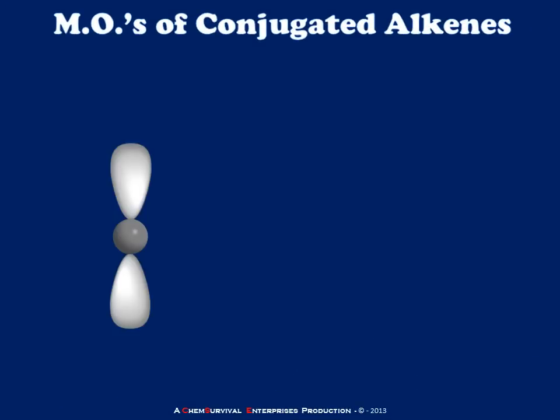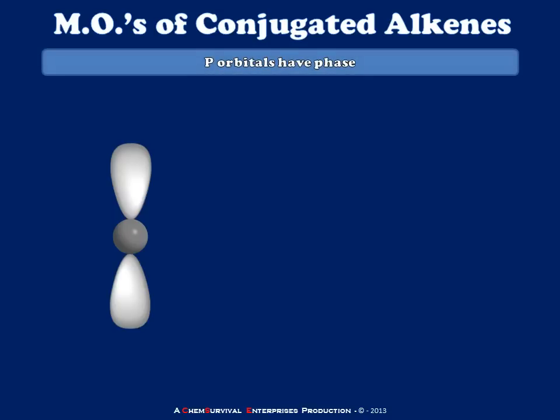I'm going to begin our discussion by showing you a p-atomic orbital. Up until now, I've been drawing atomic orbitals as usually just one color for one orbital. I'm going to have to change that now, because p-atomic orbitals have a characteristic we haven't really discussed yet, and that is phase. The phase of an orbital has to do with the fact that the lobe on the top and bottom, as I've drawn it here, are not identical to one another. In fact, one of them is what we call a positive phase and the other a negative.